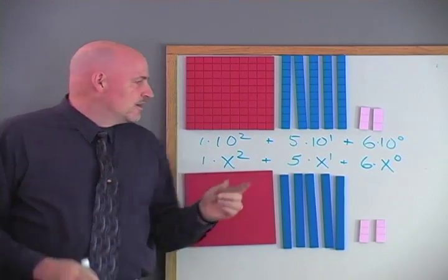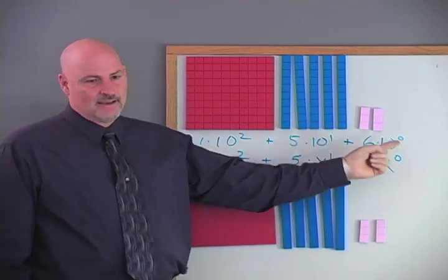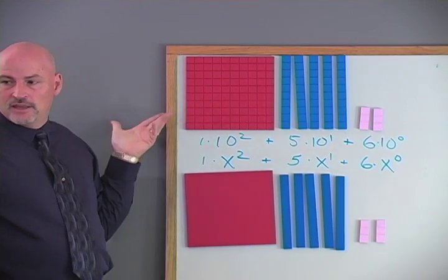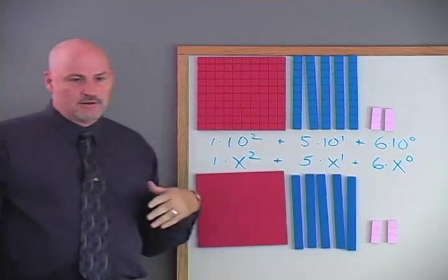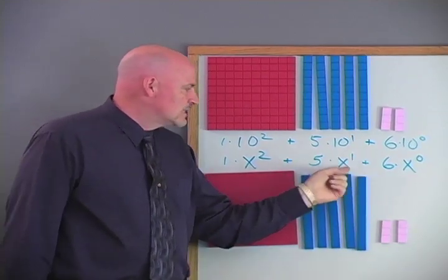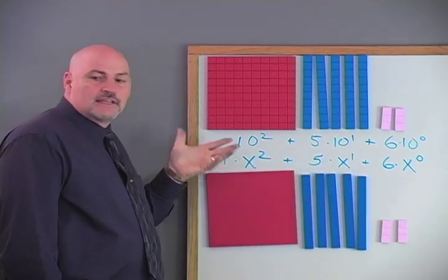So everything here is based on 10. And if we kept going, what would be the next one? Hundreds and then thousands, 10 thousands, 100 thousands, millions, et cetera. Here it would be x to the 1, x to the 2, x to the 3, x to the 4, x to the 5.